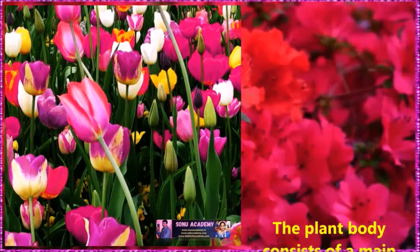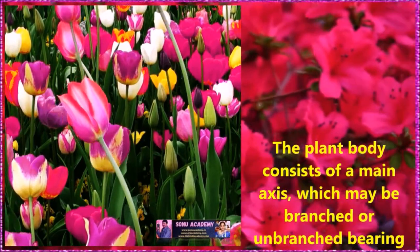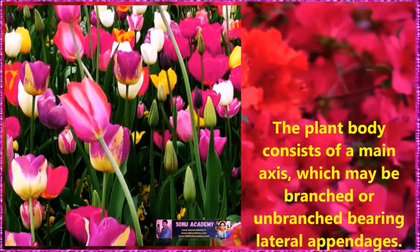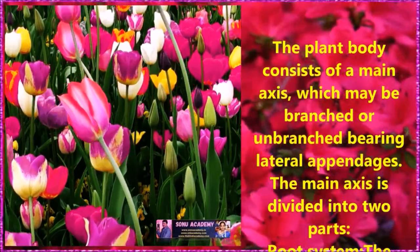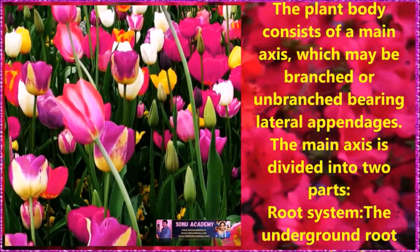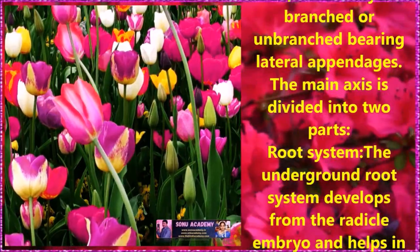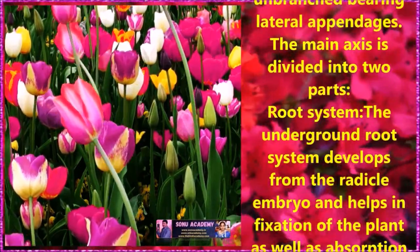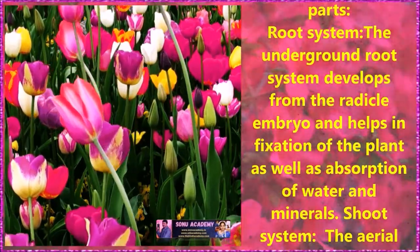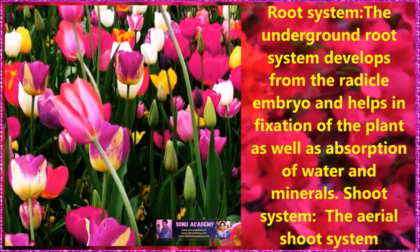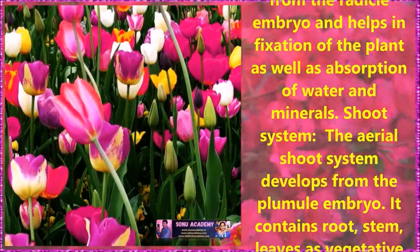Now, let us discuss about flowering plants. The plant body consists of a main axis which may be branched or unbranched bearing lateral appendages. The main axis is divided into two parts of the plant — that is, the root system and the shoot system. The underground root system develops from the radical of the embryo and helps in fixation of the plant as well as absorption of water and minerals.